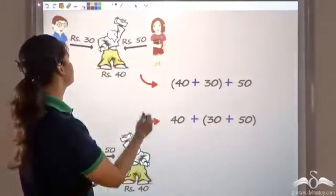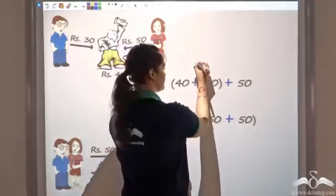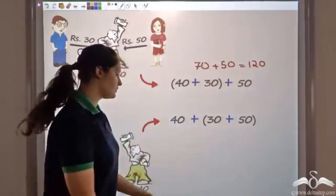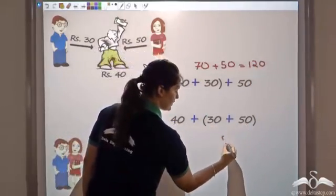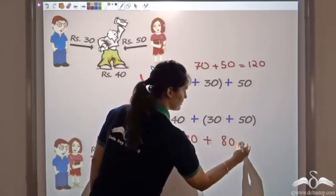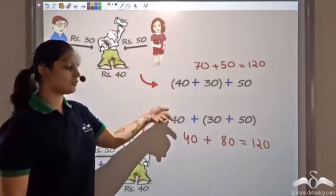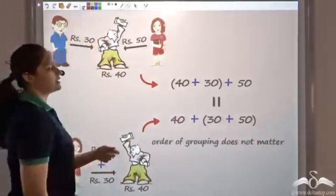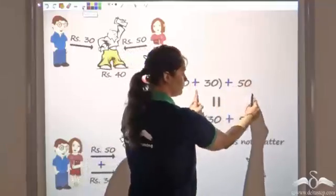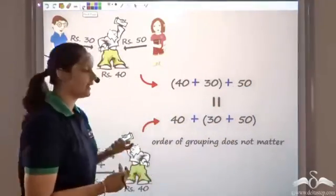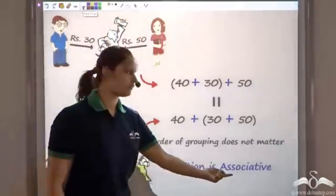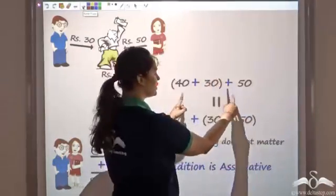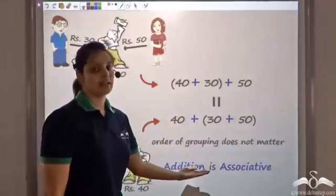In the first situation, 40 plus 30 is 70, and 70 plus 50 is 120. In the second situation, 30 plus 50 is 80, and 40 plus 80 is also 120. In both situations you get the same amount — the value is not changing. The order in which you group or associate the numbers does not matter, and hence addition is associative. Whether you associate the first two or the last two, the result is the same.